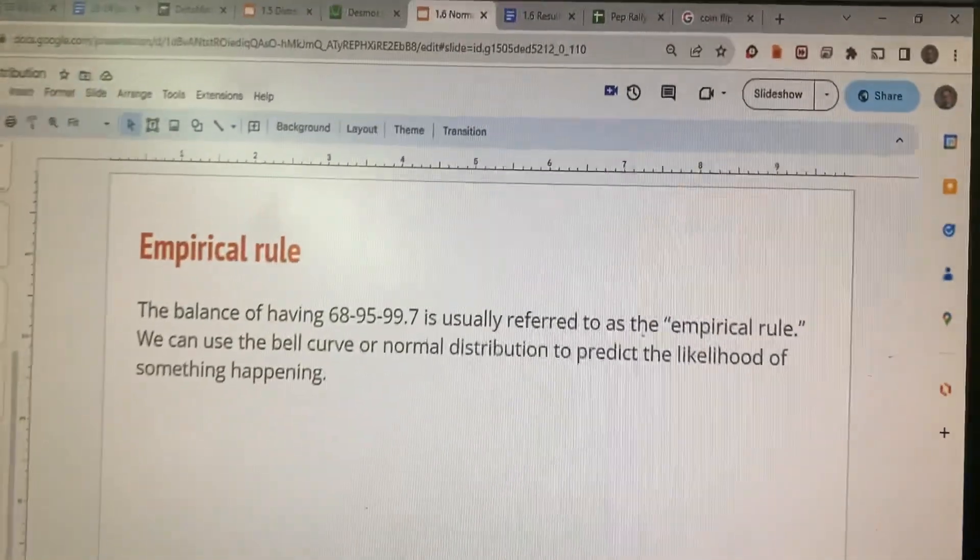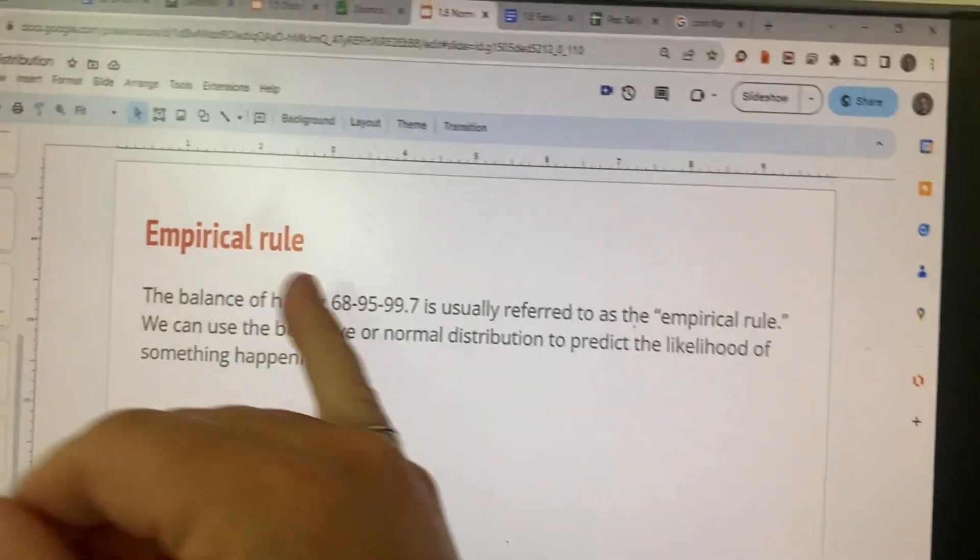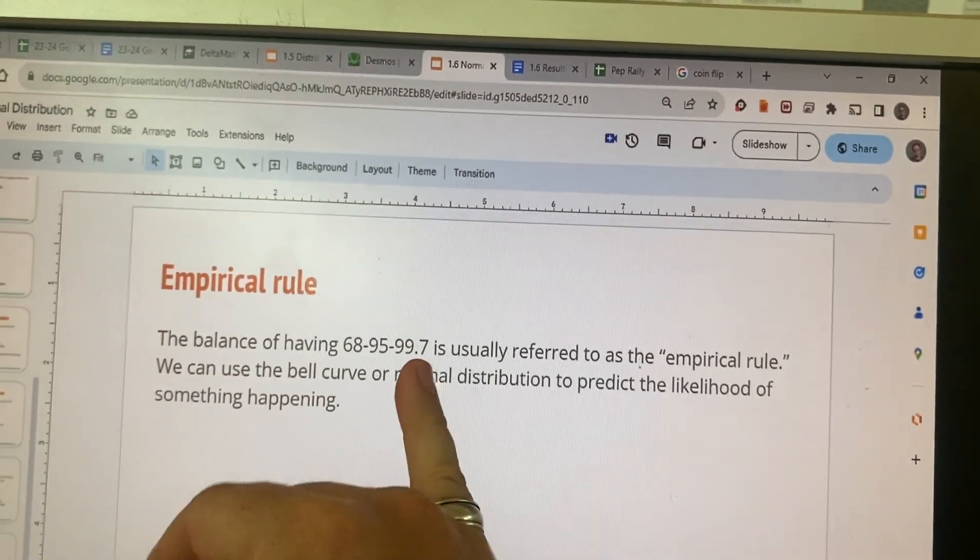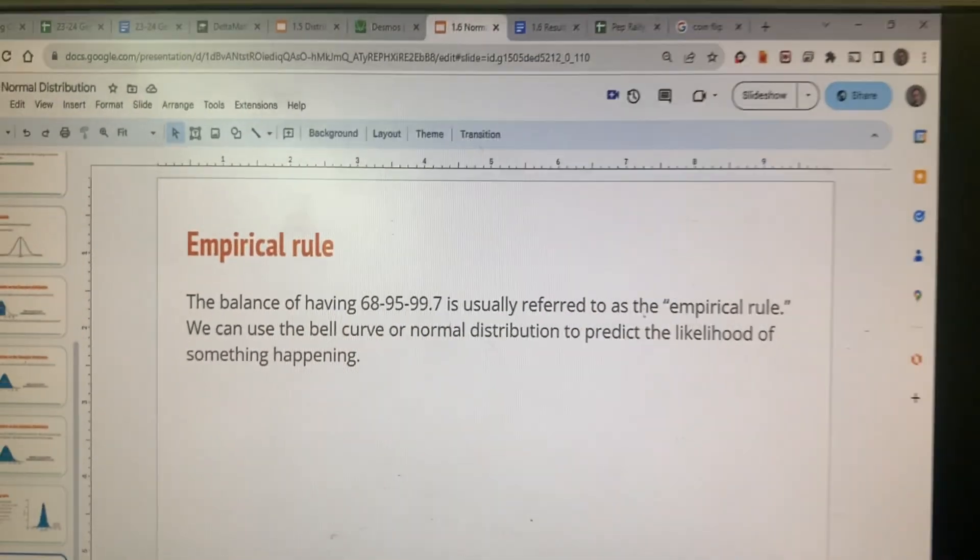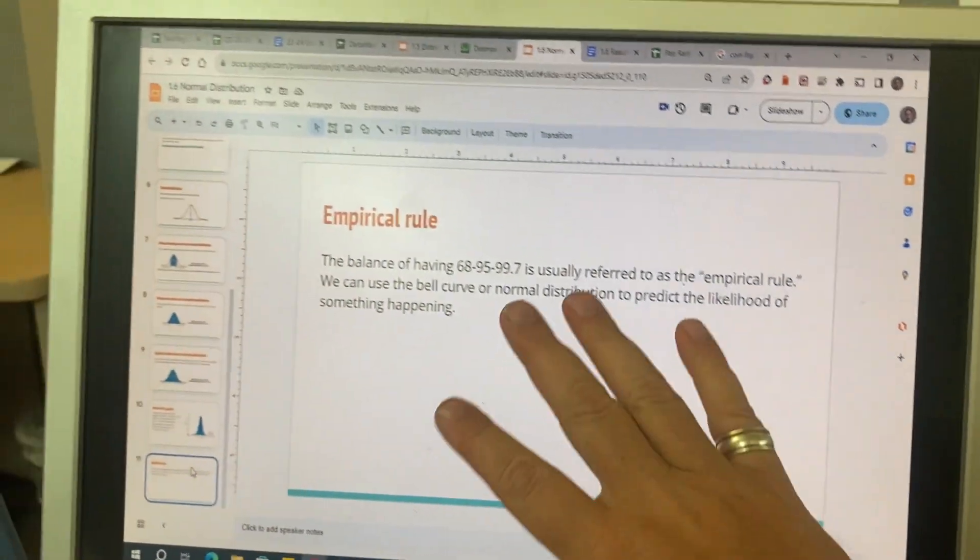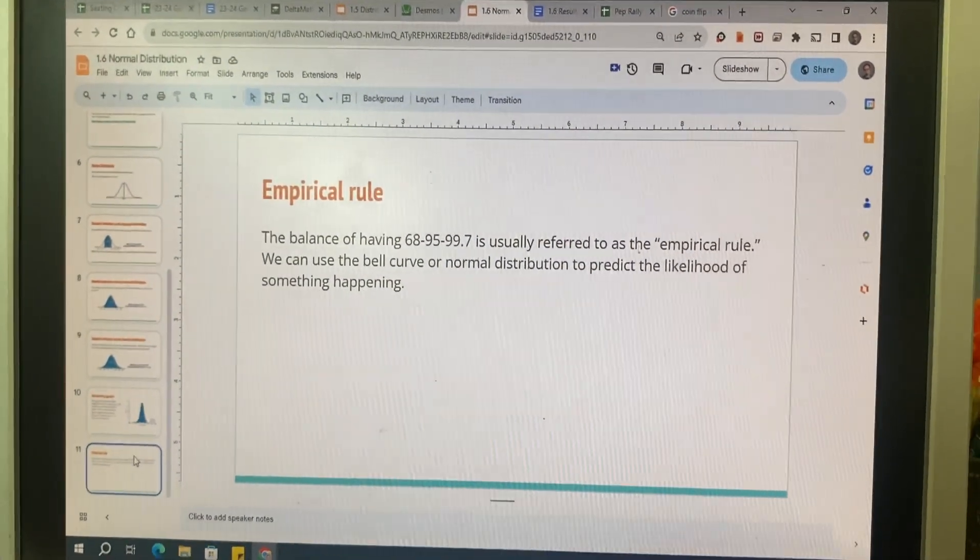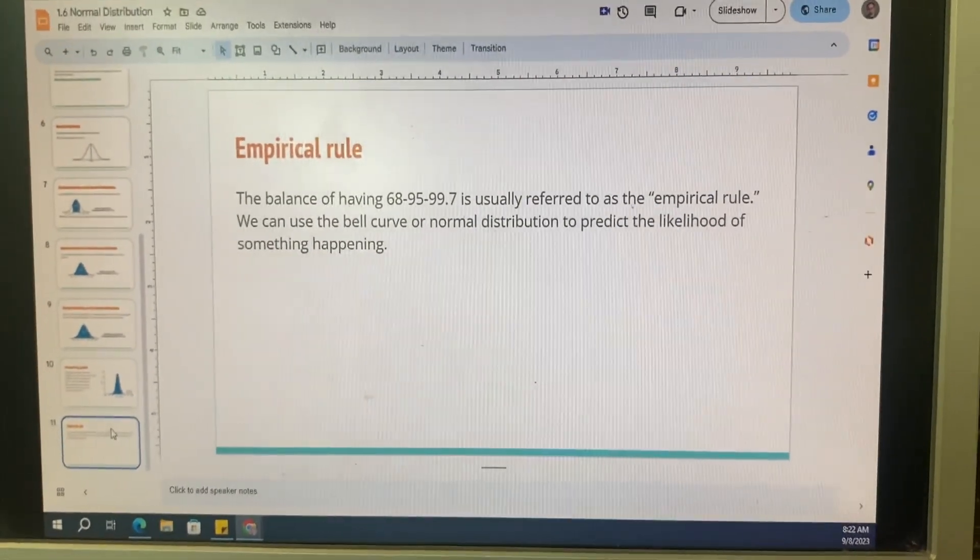So the empirical rule, this is something else you need to add to your notes. That's the balance of having that 68%, 95%, 99.7%. If we have the bell curve, the normal distribution, you can predict how likely something is to happen, and this is going to be the thing that carries us over from where we're doing statistics into where we are working on probability.